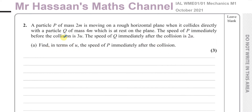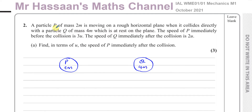Find in terms of u the speed of P immediately after the collision. Let's make a little diagram to illustrate the situation. I'm going to put particle P on this side — it doesn't really matter which side — particle P of mass 2m, and particle Q of mass 4m on the other side. Before the collision, P is moving at 3u towards Q.